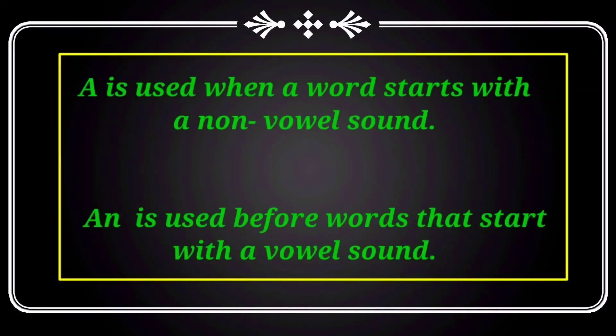Have you all understood where to use 'a' and 'an'? Shall we recall once? We use 'a' when a word begins with a consonant sound or a non-vowel sound. We use 'an' when the word begins with a vowel sound. There are five vowels: a, e, i, o, u. We can also use 'an' for a muted 'h' sound. See you in the next video. Thank you.